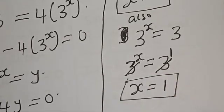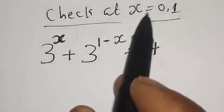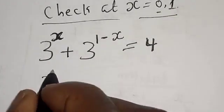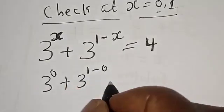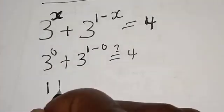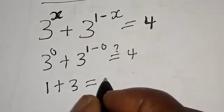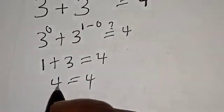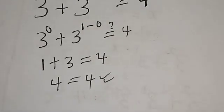Let's check to confirm if our answer is right. We check at x equals 0 first. We have 3 to the power 0 plus 3 to the power 1 minus 0, which must equal 4. Then 3 to the power 0 is 1, plus 3 to the power 1 is 3, must equal 4. So 1 plus 3 equals 4. The left-hand side equals the right-hand side. We satisfy the given equation at x equals 0.